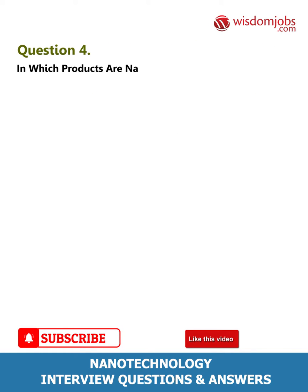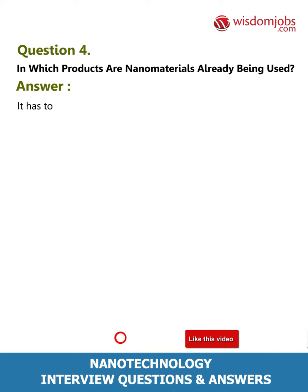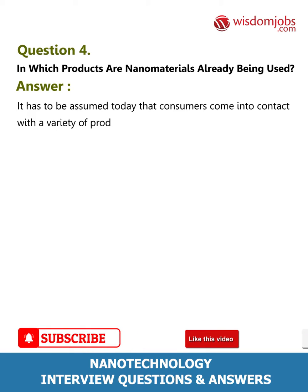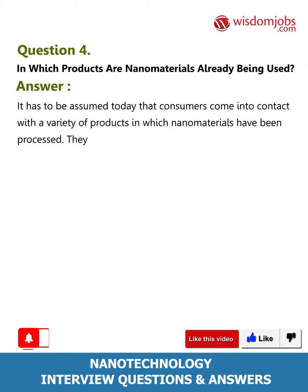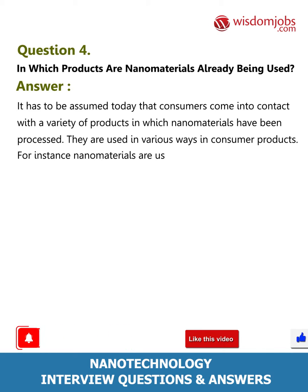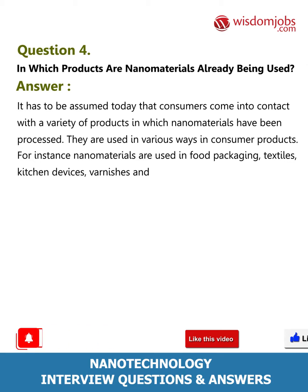Question 4: In which products are nanomaterials already being used? It has to be assumed today that consumers come into contact with a variety of products in which nanomaterials have been processed. They are used in various ways in consumer products — for instance, nanomaterials are used in food packaging, textiles, kitchen devices, varnishes, and paints.